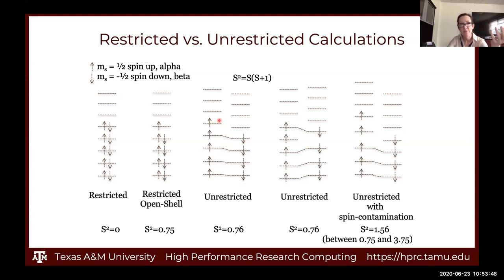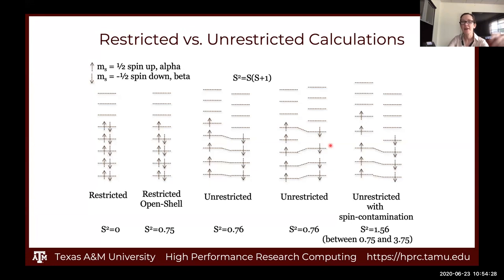A lot of people assume the highest-energy alpha occupied orbital will be the singly occupied molecular orbital, but more often the SOMO is actually lower in energy than some doubly occupied orbitals — there's a higher-energy orbital with both a spin-up and a matching spin-down. If you're doing an open-shell calculation and want to know the character of the orbital with the unpaired electron, you need to find which orbital doesn't have a matching beta electron, not just look at the highest-energy one.